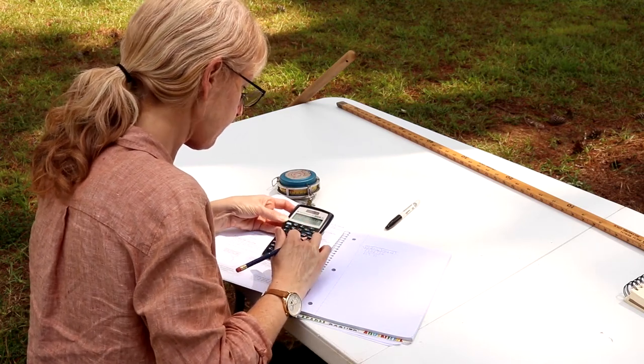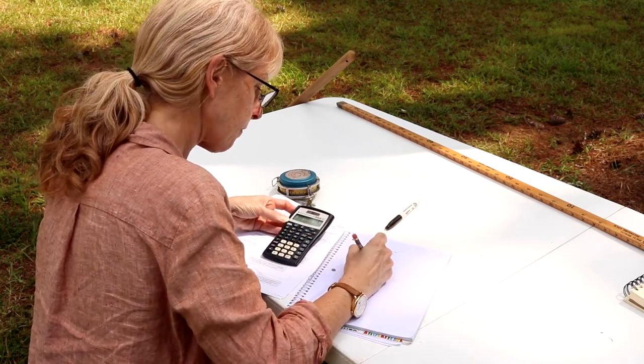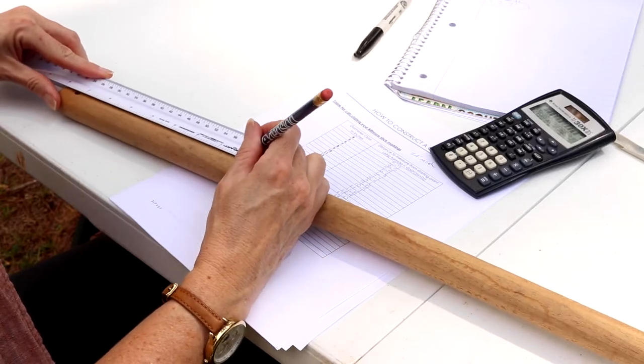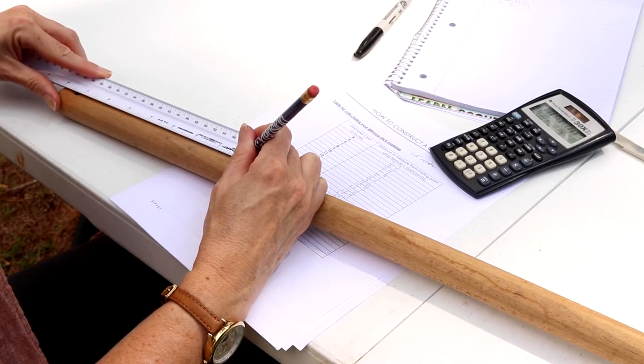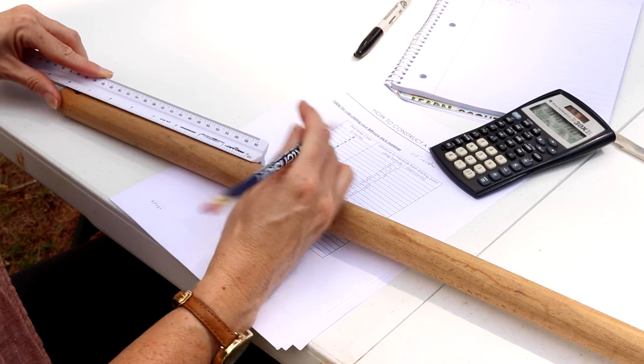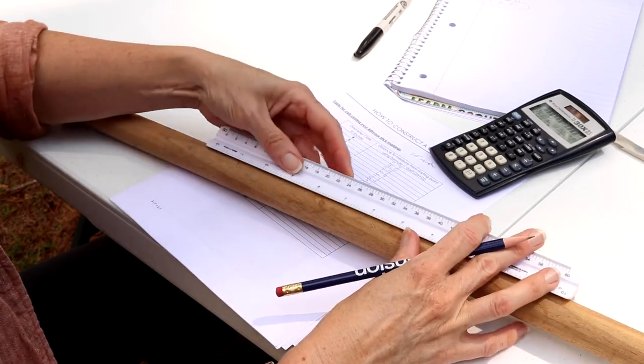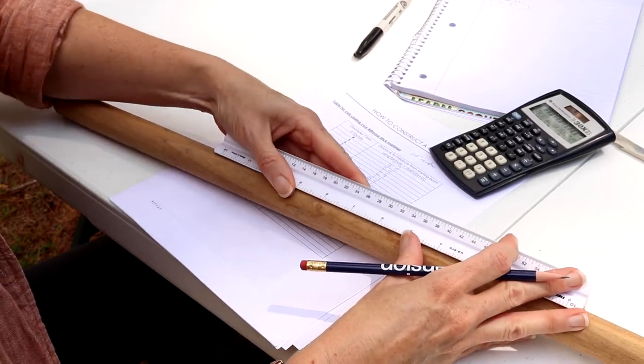Once calculations are complete, you may start crafting your Biltmore stick. To do this, find a starting point that is about 6 to 10 inches from the top of the stick and mark it with a pencil line. Starting the markings here will keep your hand from rubbing off the marks.